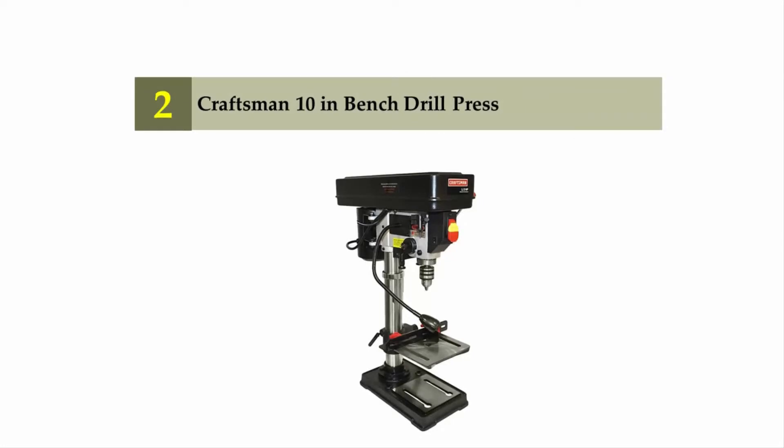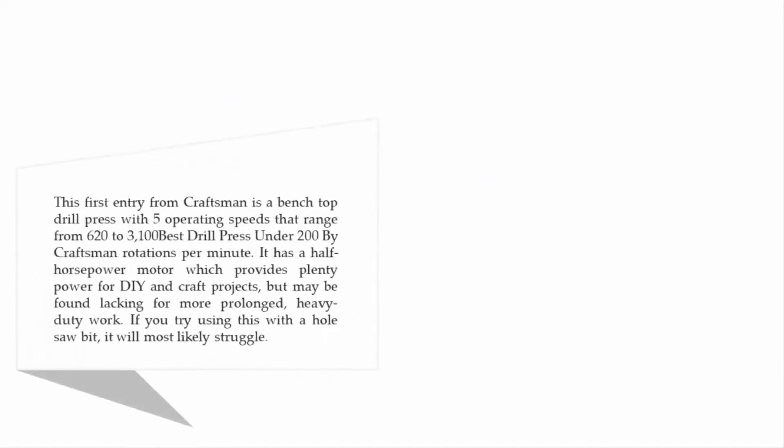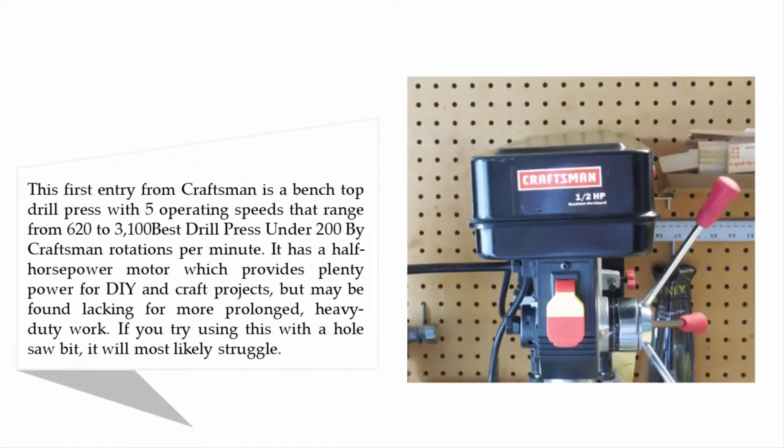This first entry from Craftsman is a bench top drill press with five operating speeds that range from 620 to 3100 rotations per minute. It has a half-horsepower motor which provides plenty of power for DIY and craft projects, but may be found lacking for more prolonged heavy-duty work. If you try using this with a hole saw bit, it will most likely struggle.